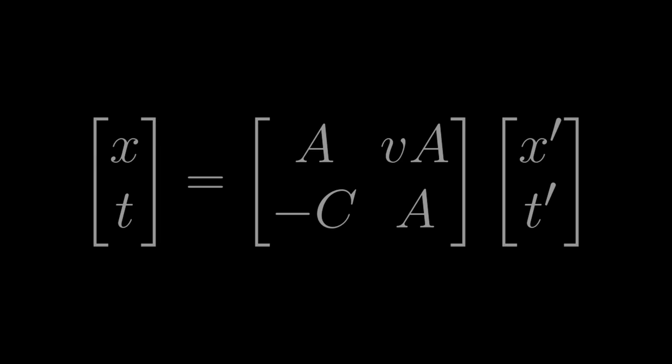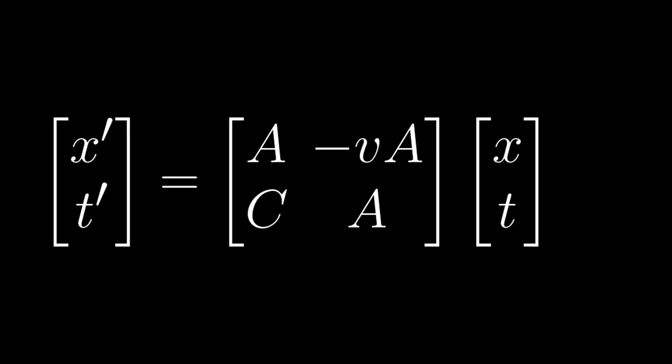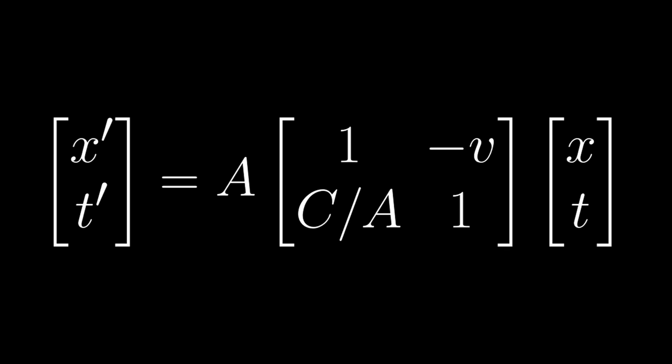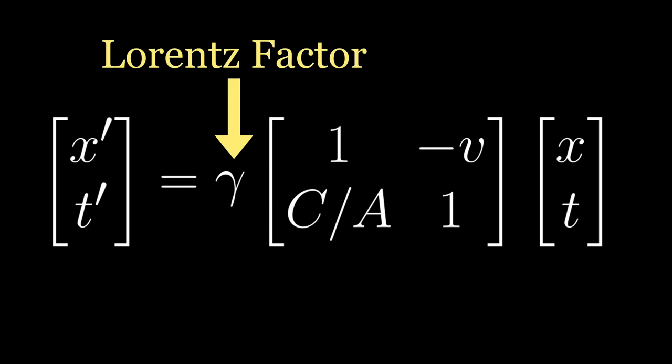At this point, it helps to do a little bit of rearrangement on the transformation. Note that this is not imposing any assumptions, but simply cleaning up the expression so that it better matches our modern conventions. To begin, let's factor out the coefficient a, and then rename it to the Greek letter gamma. This little guy is called the Lorentz factor, and it is easily the most important parameter in all of relativity. In doing so, however, we also encounter another little factor of c divided by a.